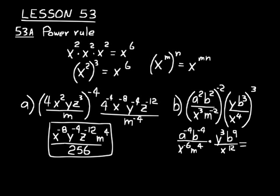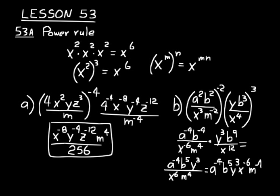Now let's simplify. We'll end up with a to the negative 4, b to the fifth, and y cubed in the numerator. For the denominator, x to the minus 6 times x to the 12 gives x to the positive 6, times m to the positive 4. Now writing the answer with all variables in the numerator: a to the negative 4, b to the fifth, y cubed, x to the negative 6, m to the negative 4.